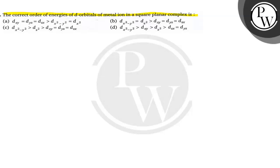We have to tell the correct order of energies of d-orbitals in square planar complex. There are four options A, B, C, D. We need to select one correct option after solving this question. Let us solve this question first.